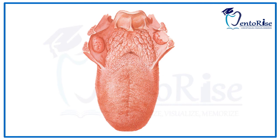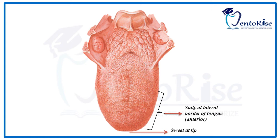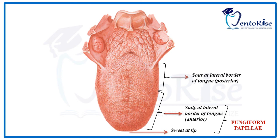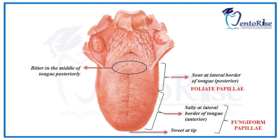Taste buds are present within these papillae, and different types of taste buds are responsible for different types of taste in different locations on the tongue. The tip of the tongue contains taste buds which impart sweet taste. The lateral border of the tongue on the anterior portion imparts salty taste, and these taste buds of sweet and salty taste are present in the fungiform papillae. The lateral border of the tongue in the posterior portion imparts sour taste, and these taste buds are present in the foliate papillae. The center of the tongue posteriorly imparts bitter taste, and these taste buds are present in the circumvallate papillae.